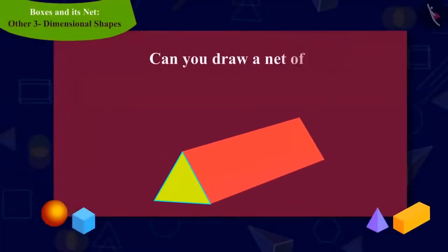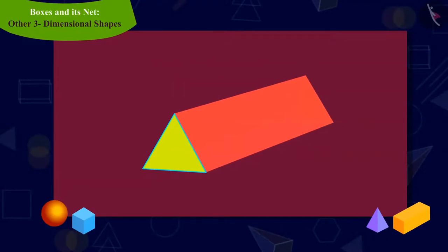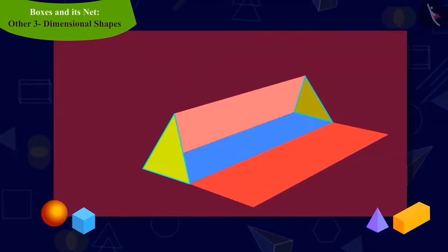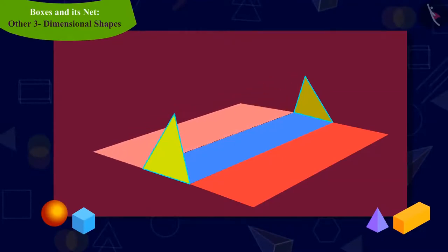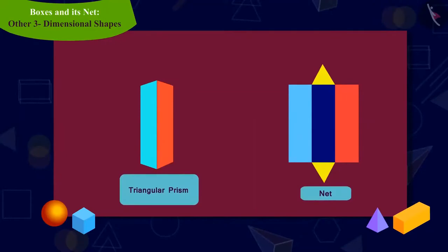Can you draw the shape of the net of this triangular prism? To do this, come, let us open the prism. In this way, by opening the right rectangular face, we can begin to draw the shape of a net. Then we can also open the left rectangular face in this way. Then, at the end, we can open both the remaining triangular faces in such a way as to form the shape of the net of a triangular prism.